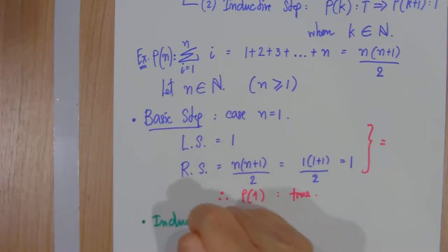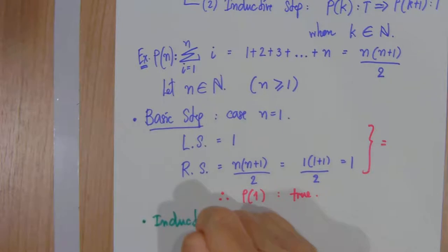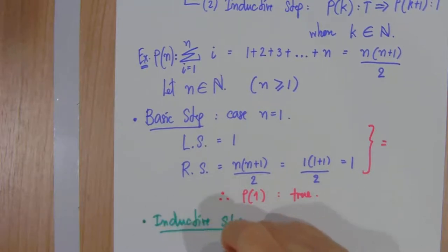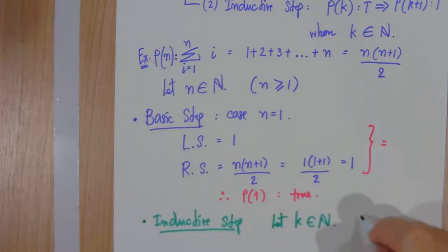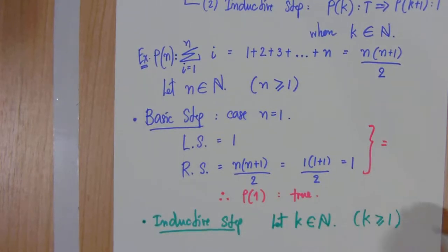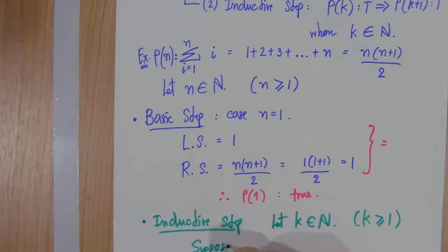For the inductive step — the inductive hypothesis — we let k be any natural number, meaning k is greater than or equal to 1, and we assume or suppose that P(k) is always true.